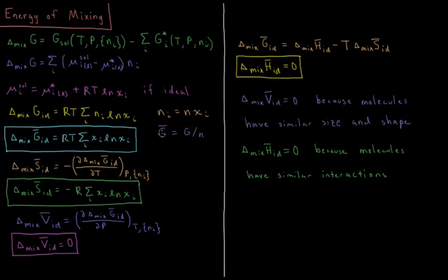This gives n·RT times the sum, and since the molar Gibbs energy is the Gibbs energy divided by the total number of moles n, the molar ideal Gibbs energy of mixing is RT times the sum over all components of χᵢ times the natural log of χᵢ.